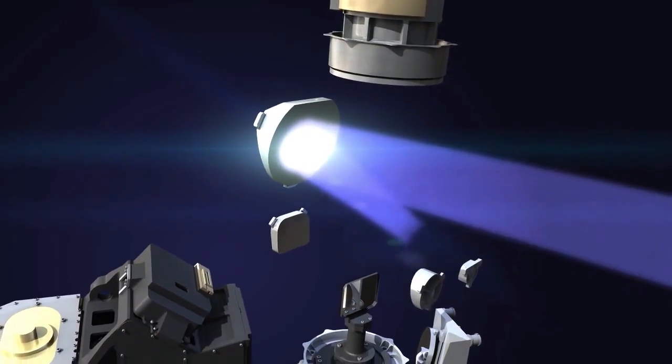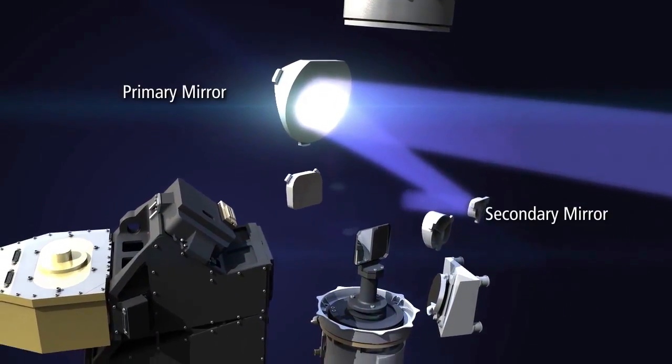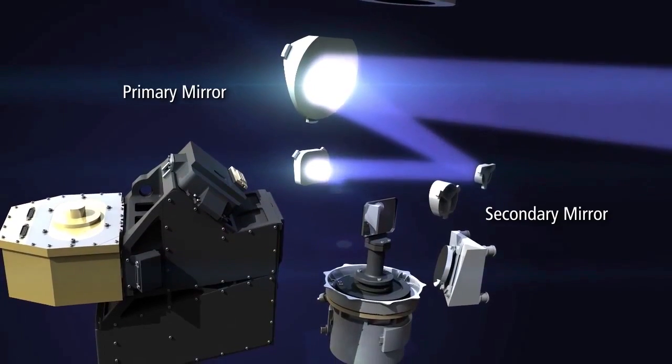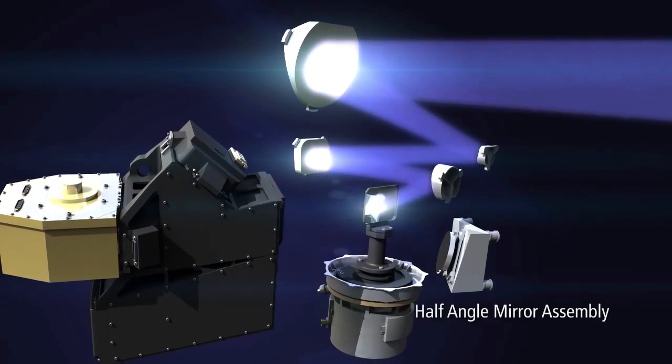As the photons strike the primary, secondary, and tertiary mirrors, light from the Earth is deflected from those mirrors onto a half-angle mirror.